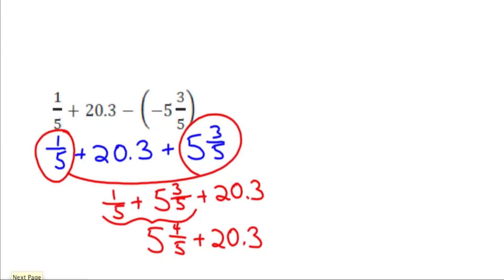Now we could either make both of these into decimals or both of these into fractions. Let's make them both into fractions. So we'll leave the 5 and 4 fifths as it is. And 20.3 is really 20 and 3 tenths, 0.3 being 3 tenths. Now in order to add them, we need to have a common denominator. So instead of thinking of it as 4 fifths, we'll multiply those both by 2. So we really have 5 and 8 tenths and 20 and 3 tenths.